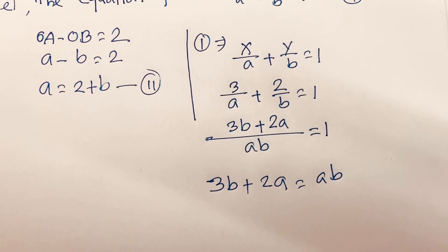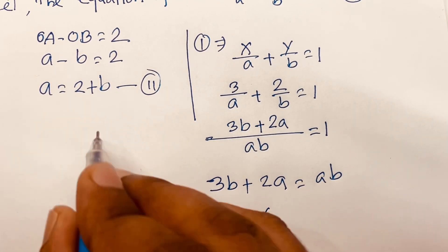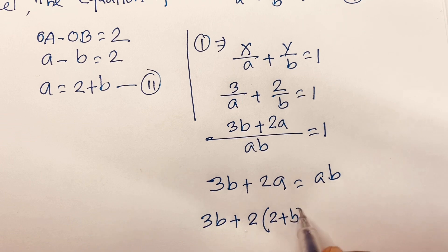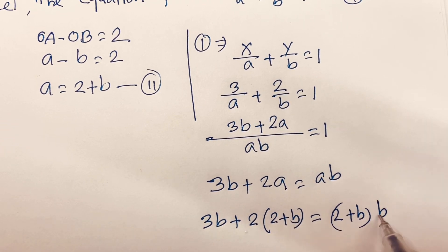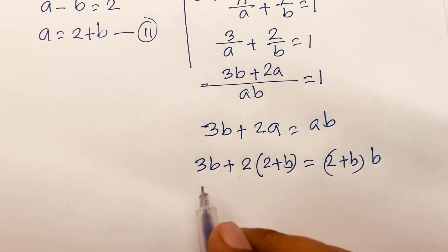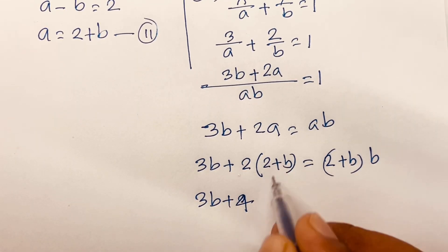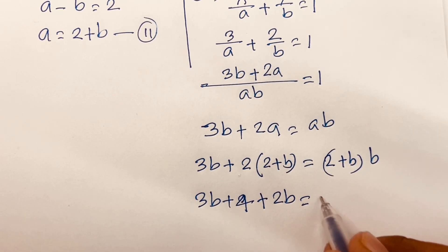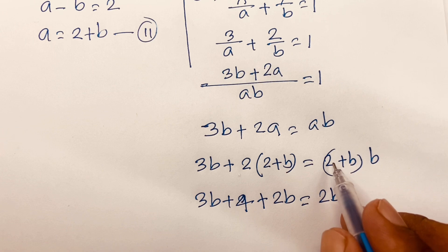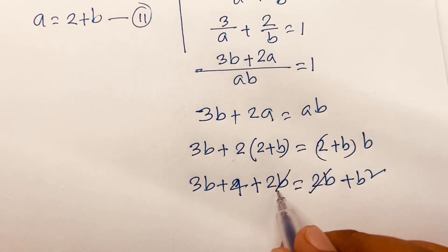We know a = 2 + b. Substituting: 3b + 2(2 + b) = (2 + b) × b. Expanding: 3b + 4 + 2b = 2b + b². So 5b + 4 = b² + 2b, and the 2b terms cancel, leaving b² minus 3b minus 4.